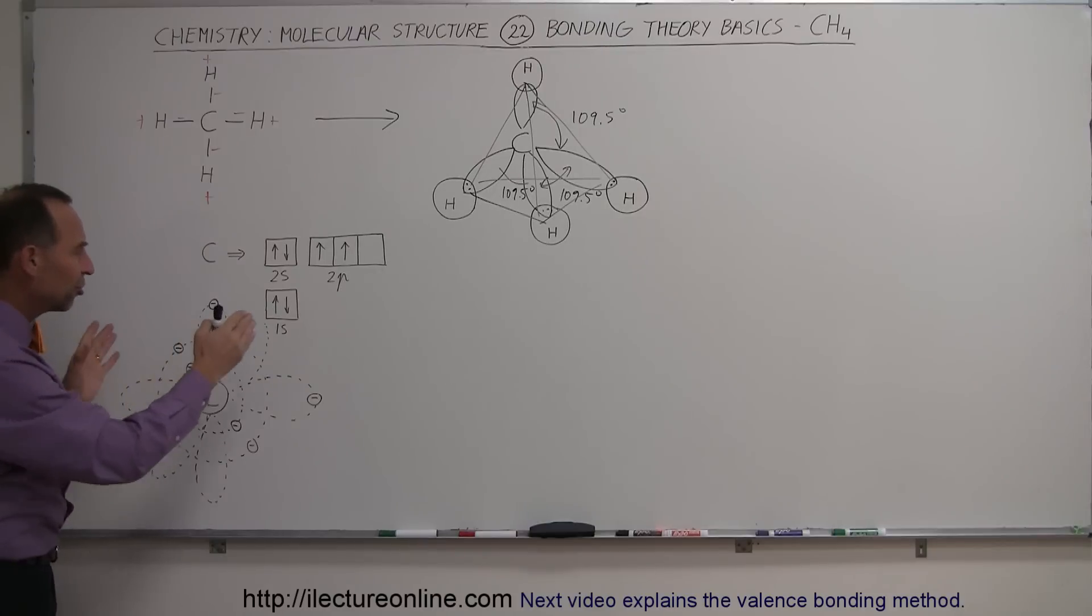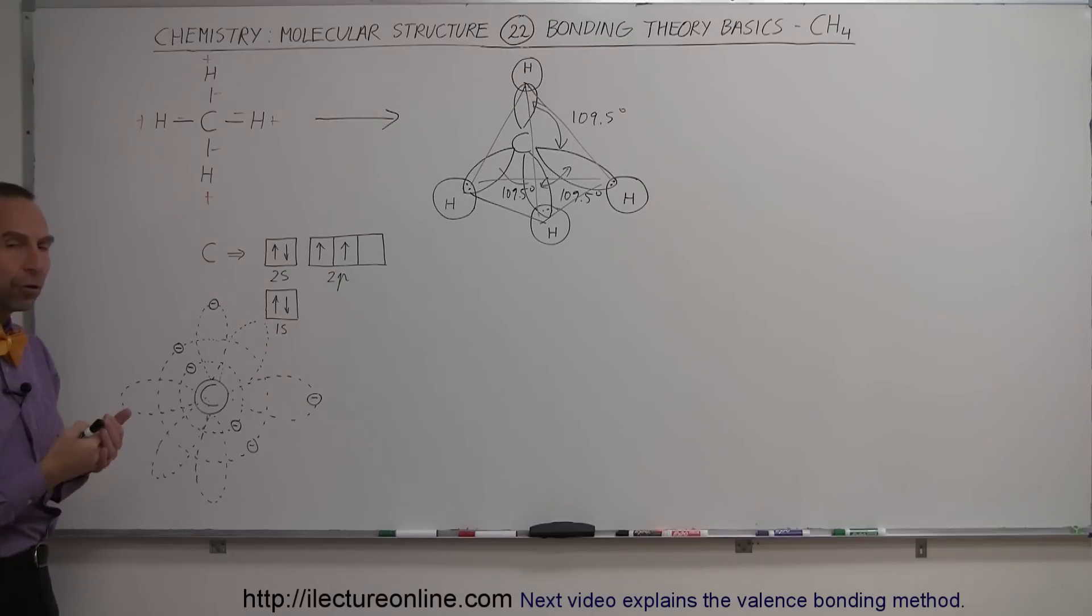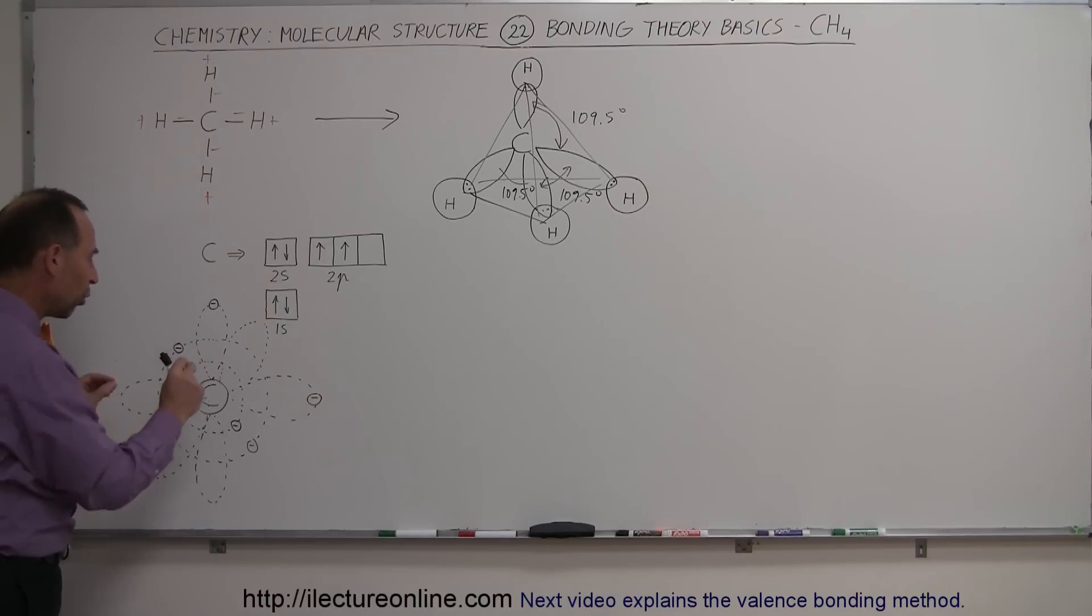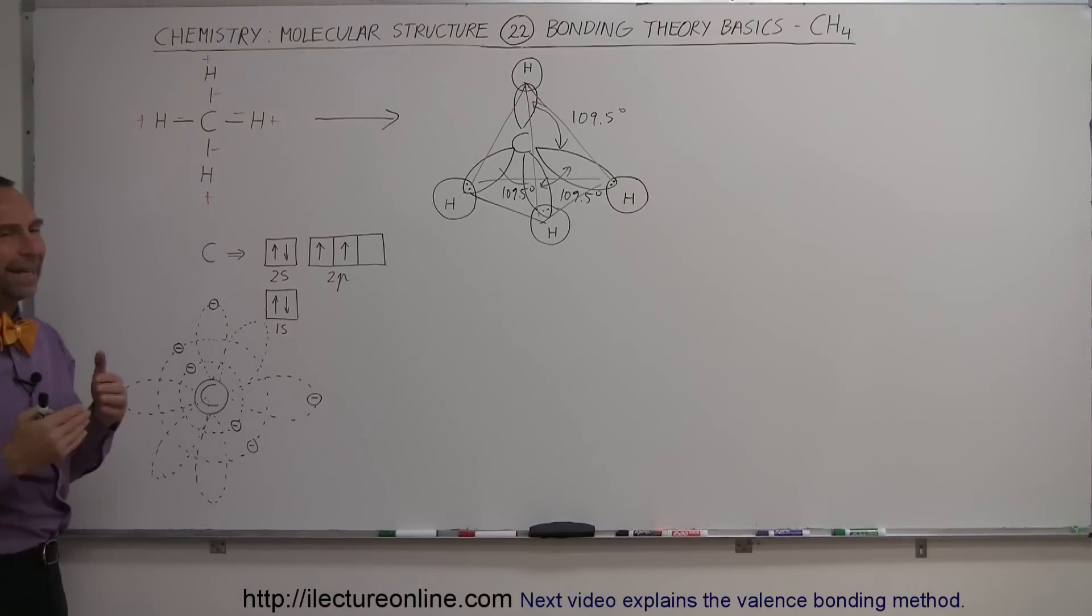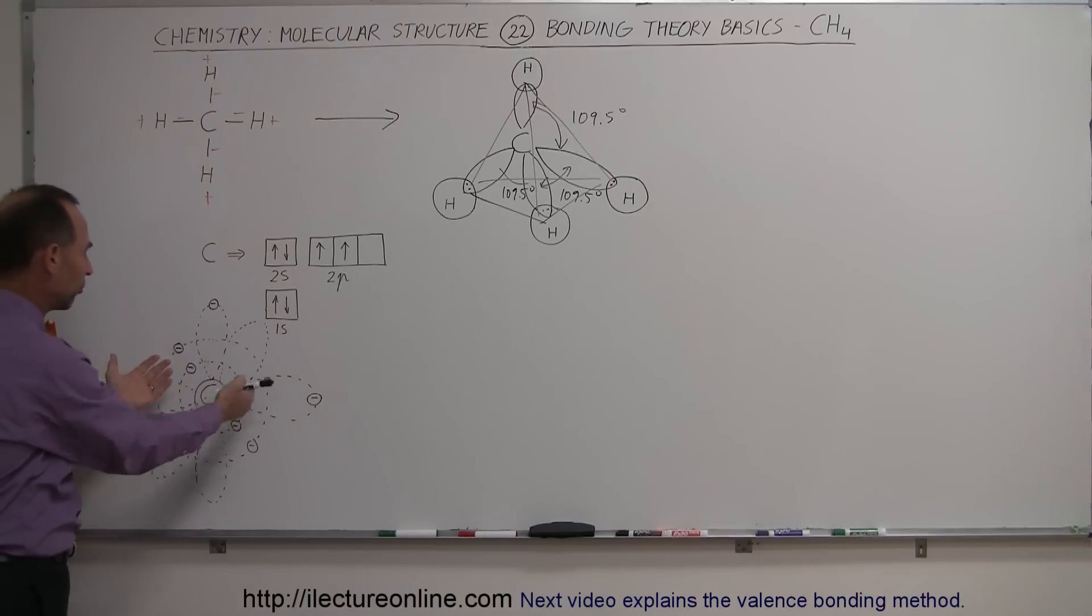So that change of shape of those orbitals is actually called hybridization. We're going to take a look at that in our future videos, that the shape of those molecules actually change to allow that bonding to take place. Several of these orbitals will join together to form a new structure. It all has to do with the repulsive forces between all the electrons and the Schrödinger equation.